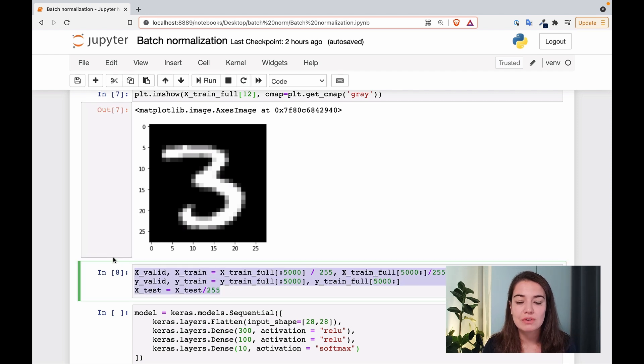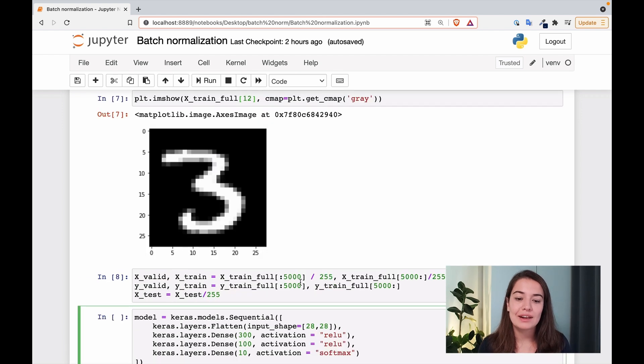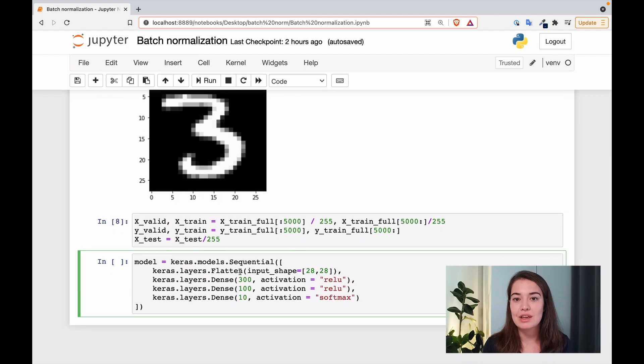So what we want to do before we feed this dataset to our network is to normalize it. One way of doing it is basically just dividing all the training values by 255. And then effectively, you're going to have a dataset where all the values go from zero to one. And later, you feed that data to your network that you created here and train it as you wish.